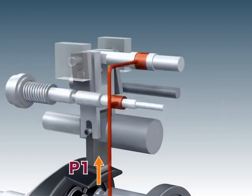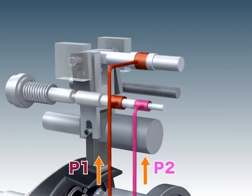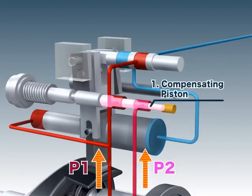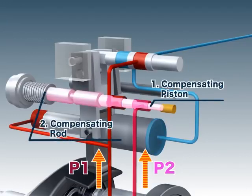When the delivery pressure of the pump, P1, or of a companion pump, P2, increases, the pressure moves the compensating piston, pushing it against the compensating rod.